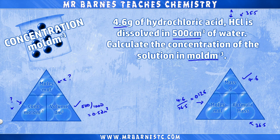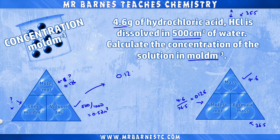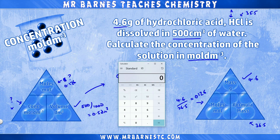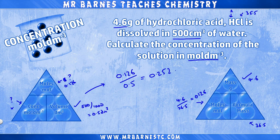We now have the moles, so we can go back to the original triangle. Concentration is moles 0.126 divided by volume 0.5, giving a concentration of 0.252 moles per decimetre cubed.